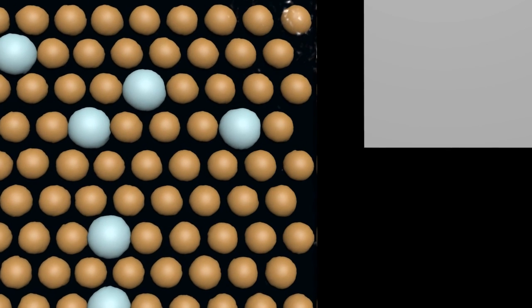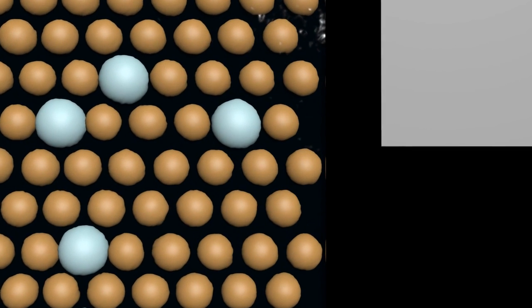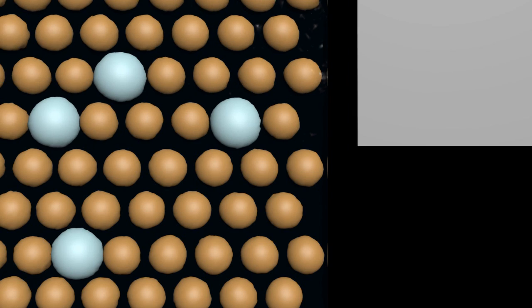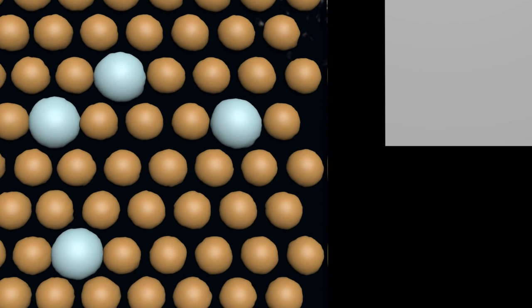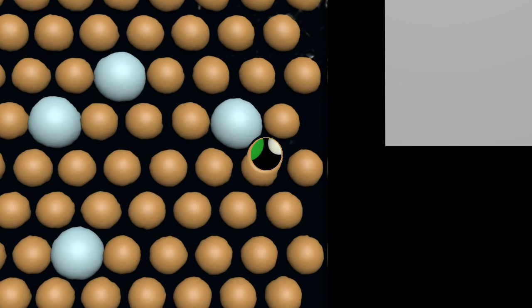But for certain alloys of metals, these have larger ions within the general structure, and so that prevents the simple movement of the ions when they're hit with a hammer. So it gives the alloy extra strength.